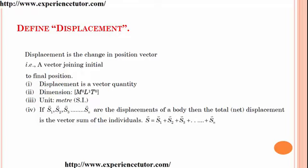Define displacement. Displacement is the change in position vector, that is, a vector joining the initial to the final position. First, displacement is a vector quantity. Second, its dimension is M⁰L¹T⁰. Third, its unit is meter. If s1, s2, s3, …sn are the displacements of a body, then the total or net displacement is the vector sum of the individuals: s = s1 + s2 + s3 + … + sn.